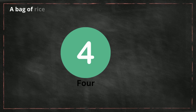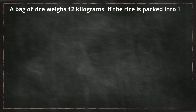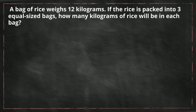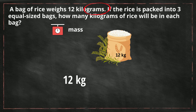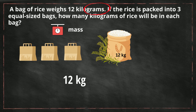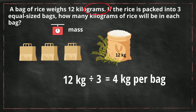A bag of rice weighs 12 kilograms. If the rice is packed into three equal-sized bags, how many kilograms of rice will be in each bag? First, what are we measuring? I see 'grams,' so we are measuring mass. I start with 12 kilograms and I'm going to divide this into three equal-sized bags. So if I take 12 divided by three, that gives me four kilograms. So each of the three bags will hold four kilograms of rice.